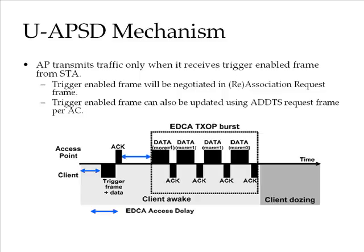APSD power save is an enhancement over the legacy power save mechanisms supported by Wi-Fi networks. It allows devices to spend more time in a dozing state, which consumes less power, while improving performance by minimizing transmission latency. Furthermore, APSD power save promotes more efficient and flexible over-the-air transmissions by enabling individual applications to control capacity and latency requirements.